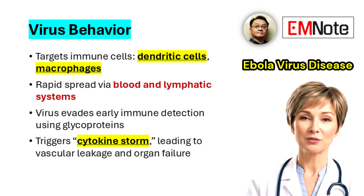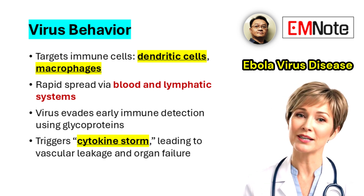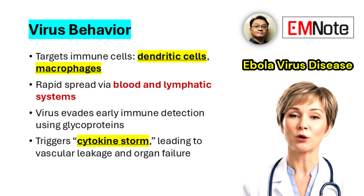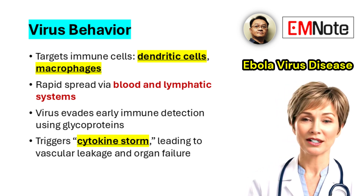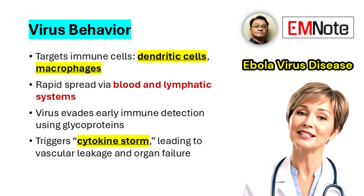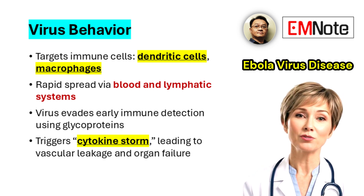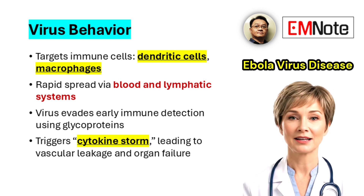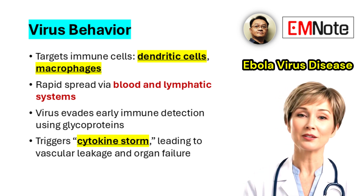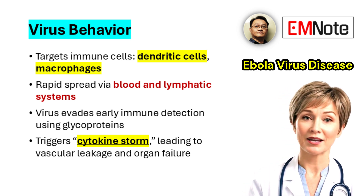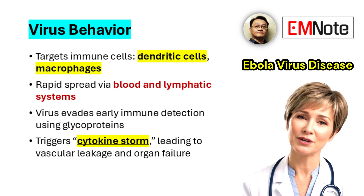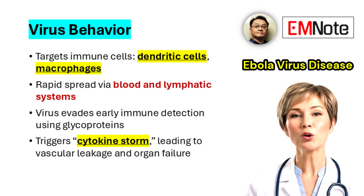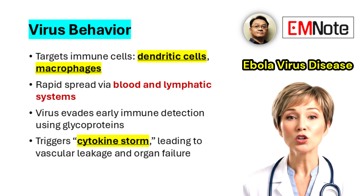This leads to widespread infection of various tissues, including endothelial cells, hepatocytes, and adrenal cortical cells. The pathophysiology of Ebola virus disease is marked by significant immune system dysregulation. The viral glycoprotein facilitates viral entry into host cells and helps evade immune responses. A secreted form of glycoprotein may bind to neutrophils, inhibiting their activation.